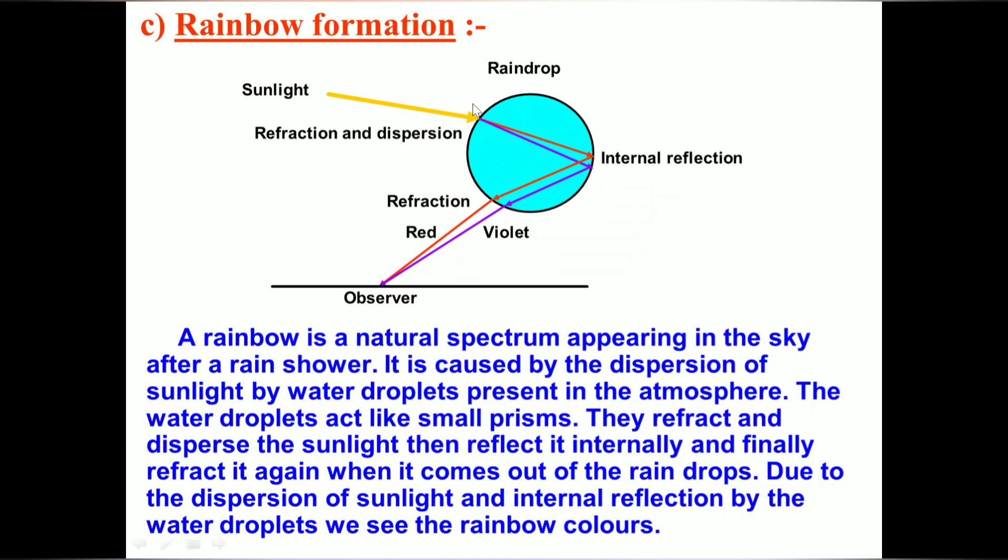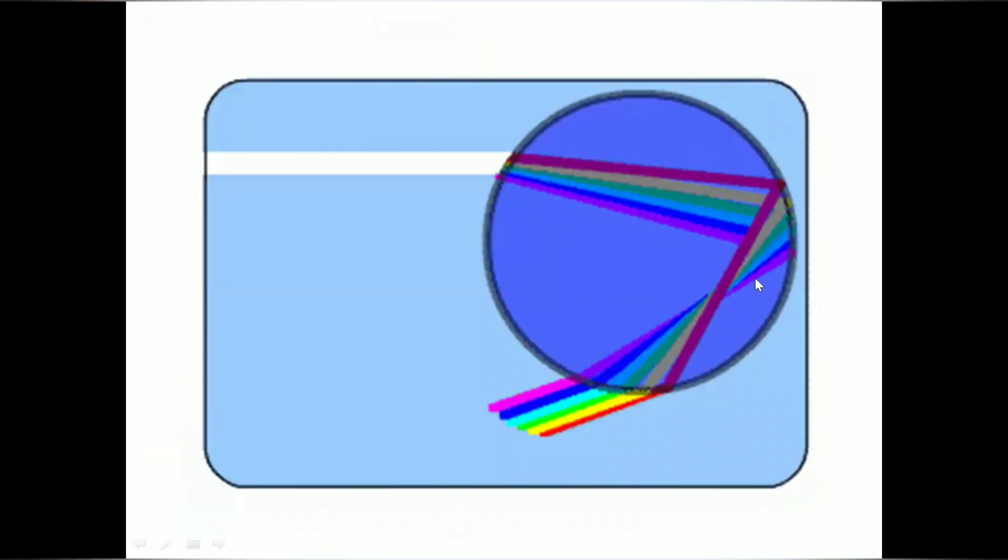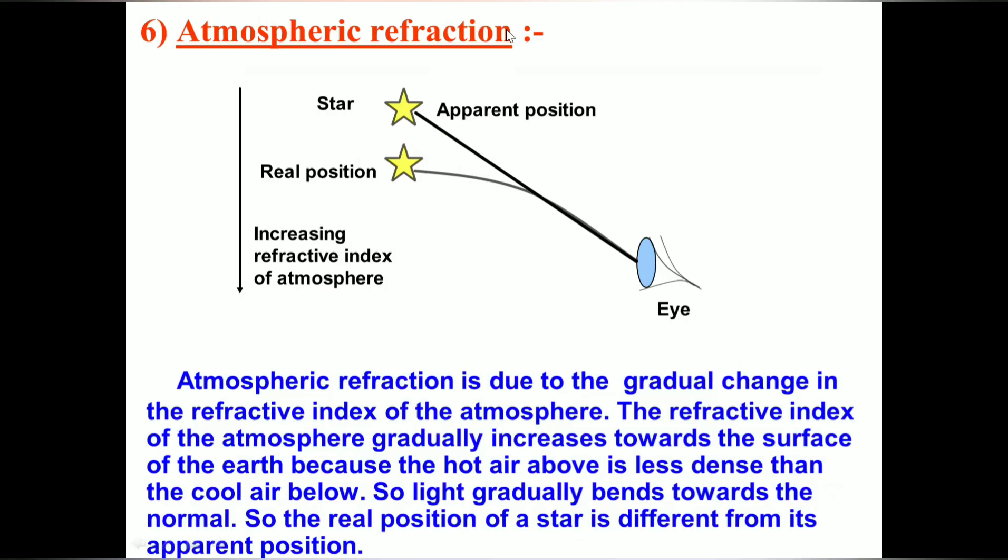The processes are: first, refraction phenomenon, then dispersion, then internal reflection, and after that, refraction again. These are the processes we discussed in live classes for how rainbow formation takes place.